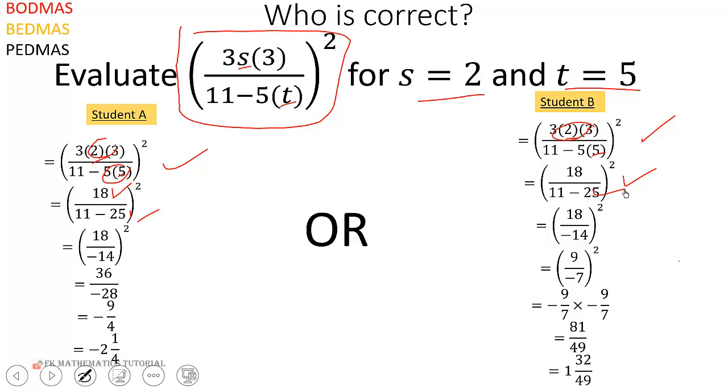And the next thing they are supposed to do is to evaluate this expression here. So how did they go about it? This one further simplified this by reducing by a factor of 2 to get this, which is correct. And then negative 9 over 7 squared is the same as negative 9 over 7 times negative 9 over 7. So I just write up to this point.